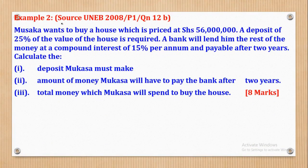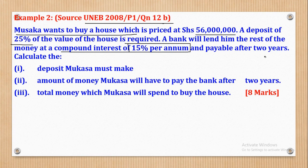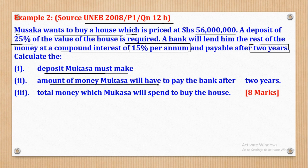Now we go to Example 2, which came from UNEB 2008 Paper 1 Question 12b. It says: Mkasa wants to buy a house priced at shillings 56,000,000. A deposit of 25% of the value of the house is required. A bank will lend him the rest of the money at a compound interest rate of 15% per annum, payable after 2 years. Calculate: (i) the deposit Mkasa must make, (ii) the amount of money Mkasa will have to pay the bank after 2 years, and (iii) the total money Mkasa will spend to buy the house.